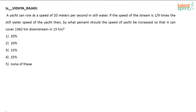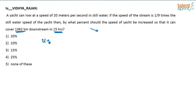Everything has to be in the same unit, so we have to convert — keep that in mind. Now, the yacht is going downstream, so the net speed of the yacht is U plus V: the speed of the yacht in still water plus the speed of the water current.